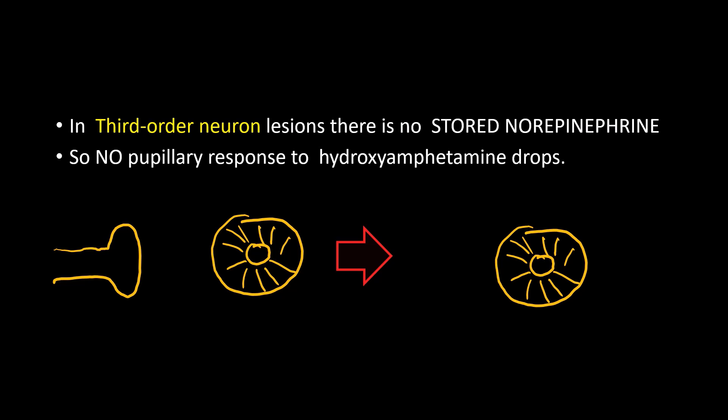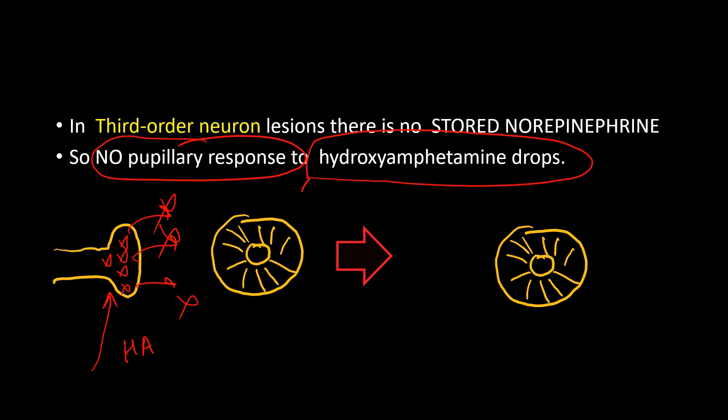If there is a third order neuron problem, the long ciliary nerve itself is affected. The third order neuron will not have any norepinephrine stored in the presynaptic terminal. When hydroxyamphetamine is given, since there is no stored norepinephrine, none will be released into the synapse, so there is no sympathetic activity and therefore no pupillary response. In a patient with confirmed Horner syndrome, if hydroxyamphetamine produces no response, it means the patient has third order neuron Horner syndrome.